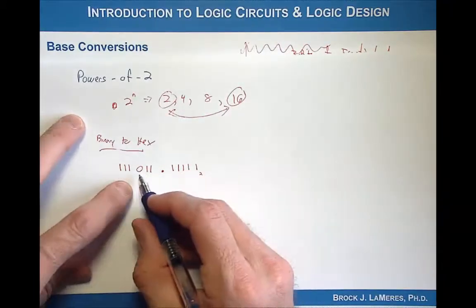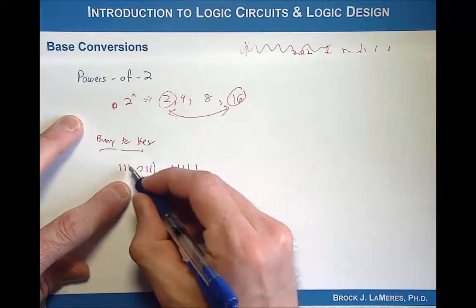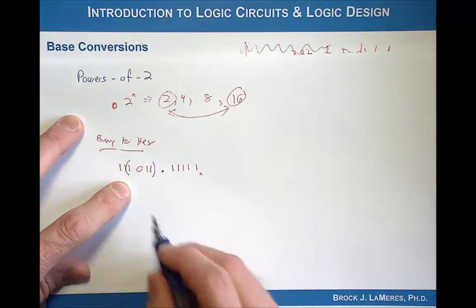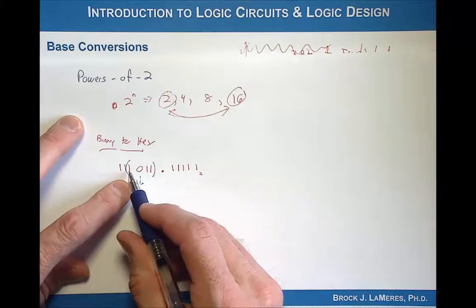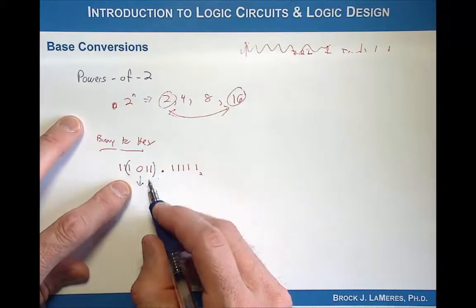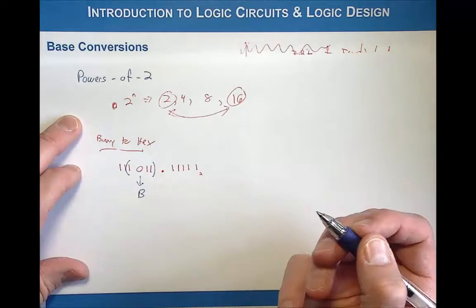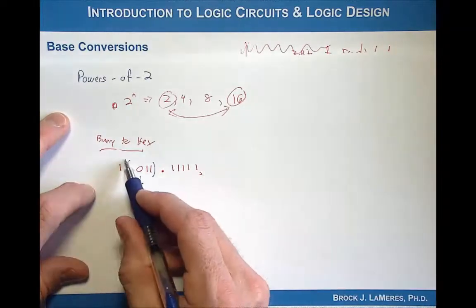What I mean by that is if I looked at the whole number portion, I would grab 4 bits at a time and then convert that directly into a hex symbol. So for example, 1011 is going to be the hex symbol B, and then I come over here and do another group.